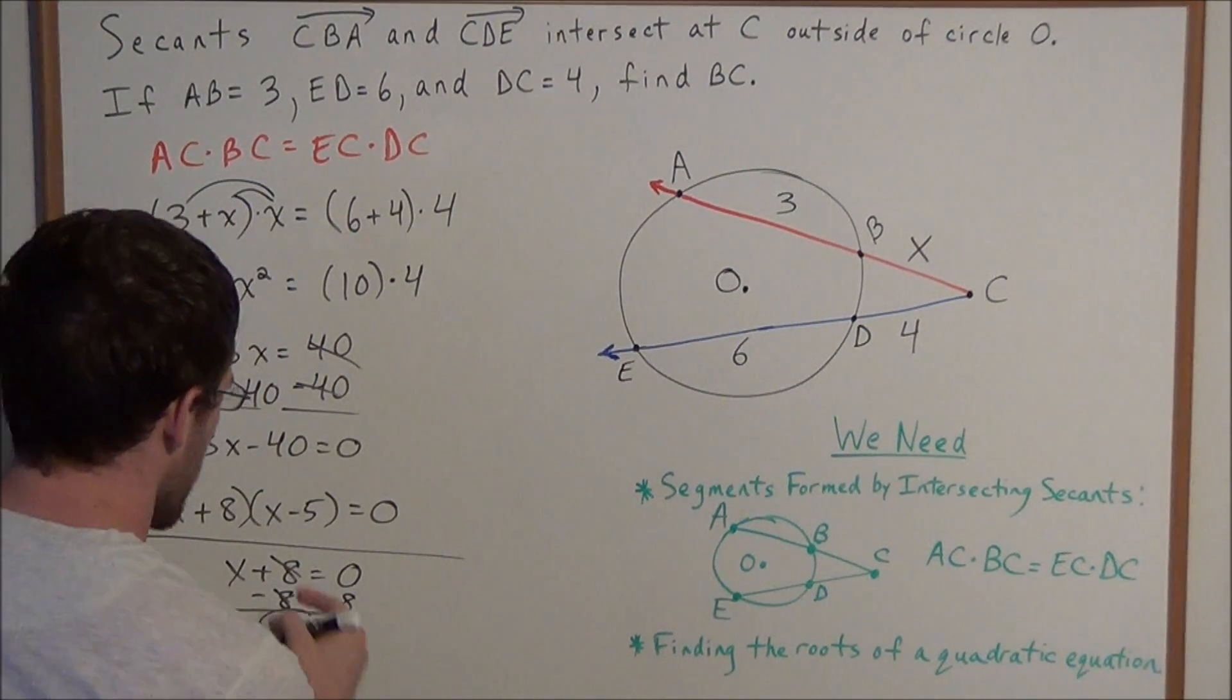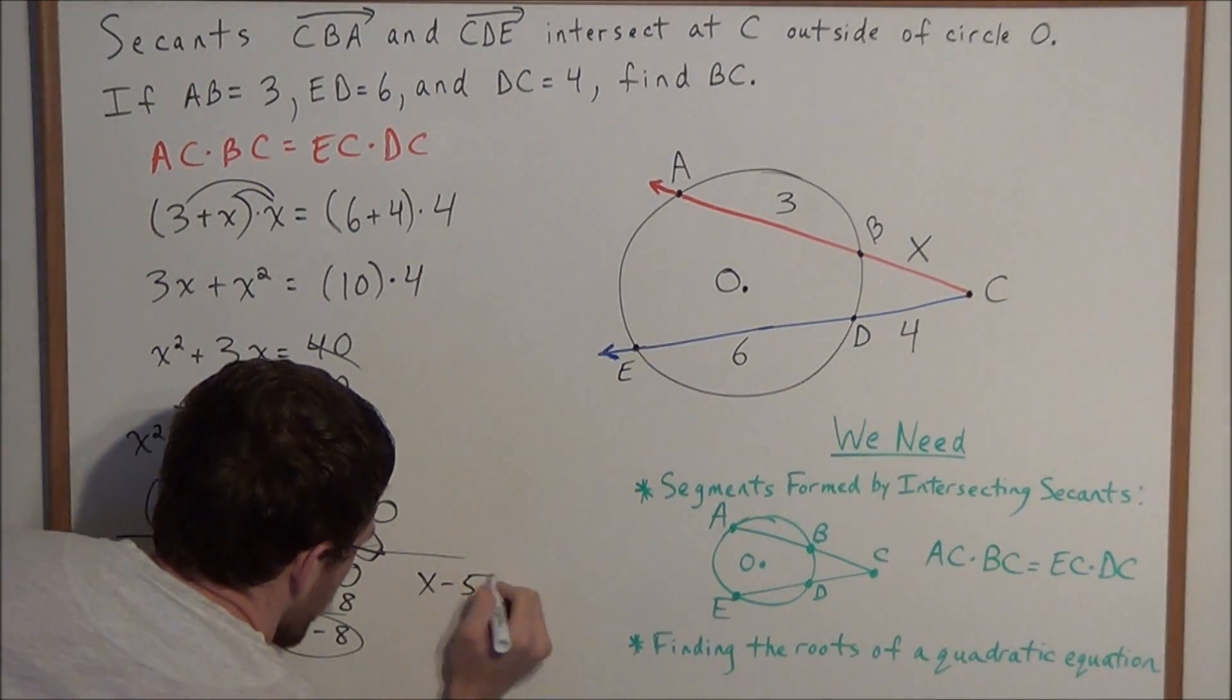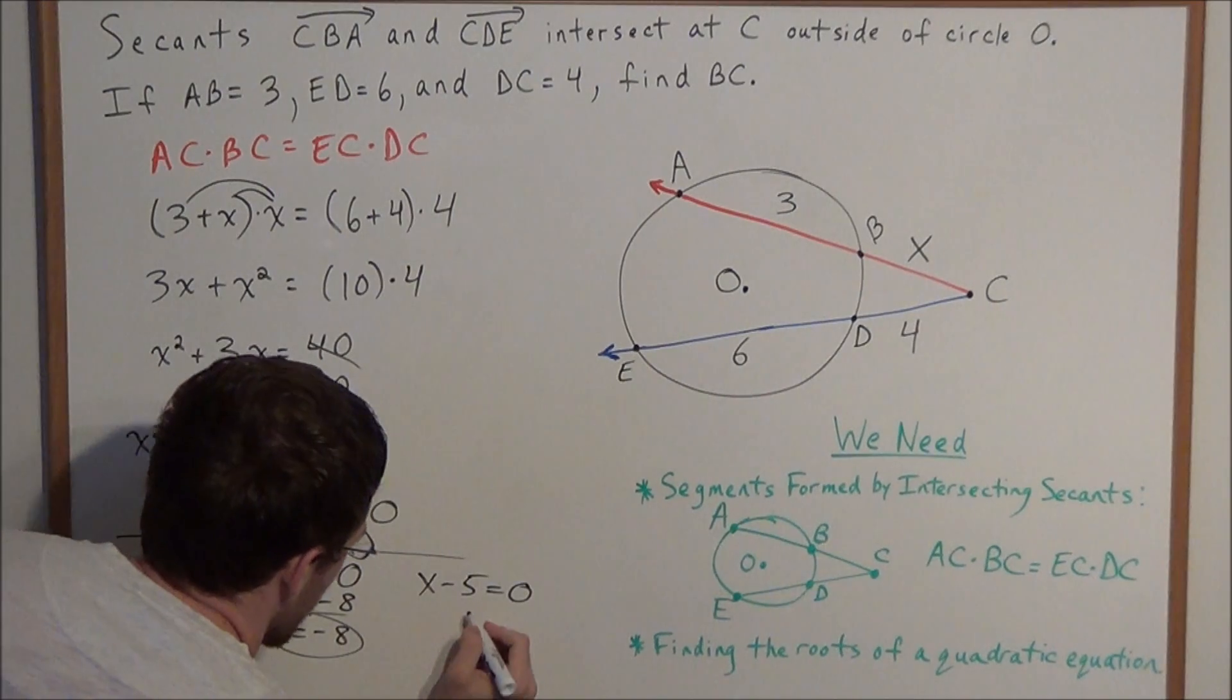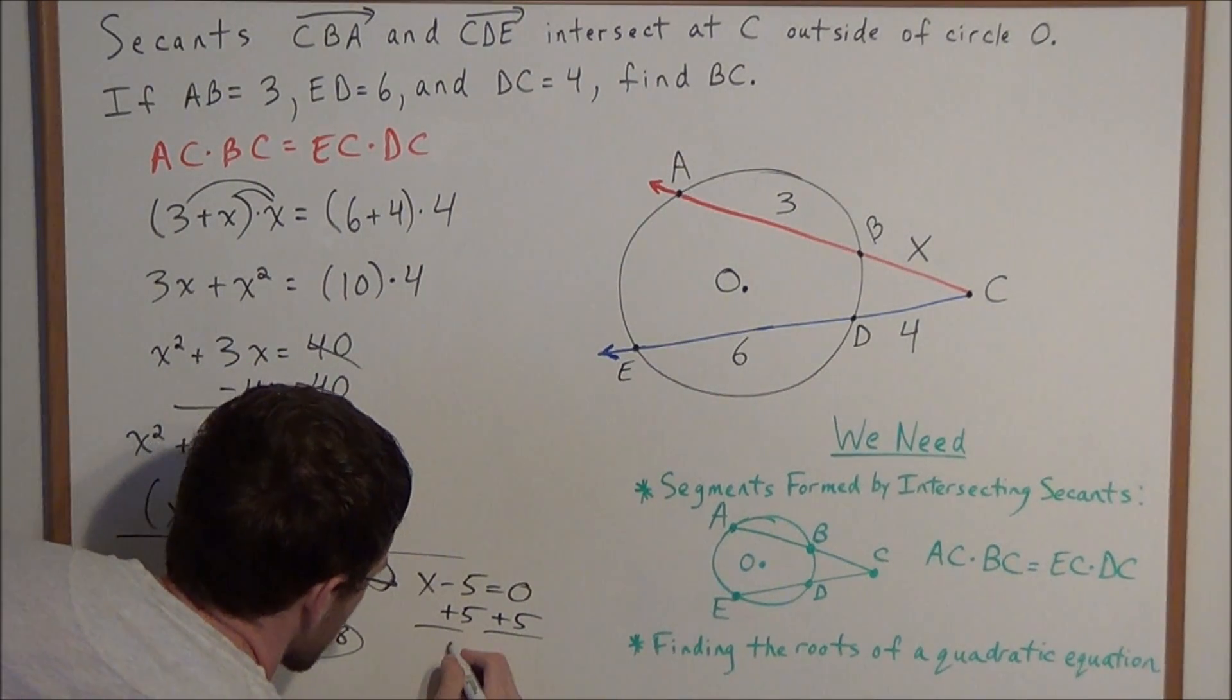And we consider the other case when X minus 5 equals 0. To solve for X in this case, we add 5 to both sides, and this gives us X equals positive 5.